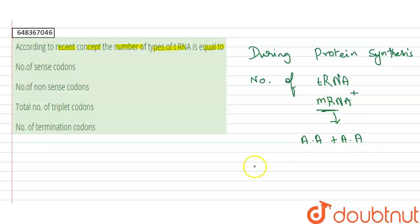Here, the mRNA having the sense codons, sense codons for which suitable for tRNA. Based on this concept, our answer is option A.